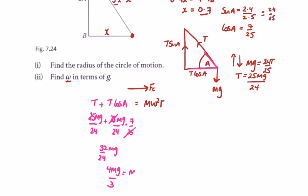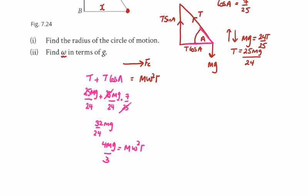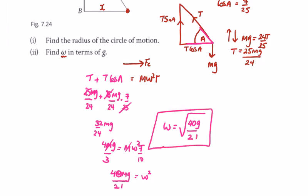Dividing by r equals mω²r, so ω equals the square root of 4g over 3r, which in terms of g simplifies to the square root of 40g over 21.